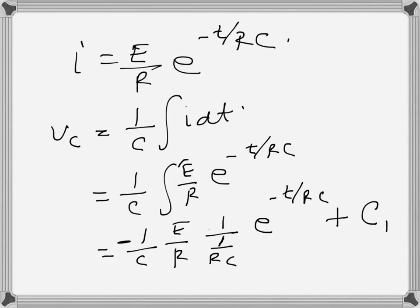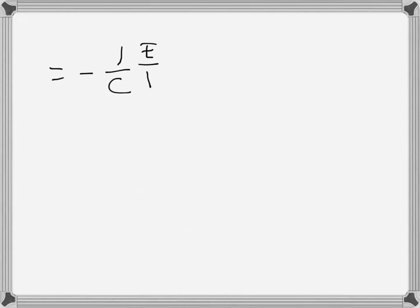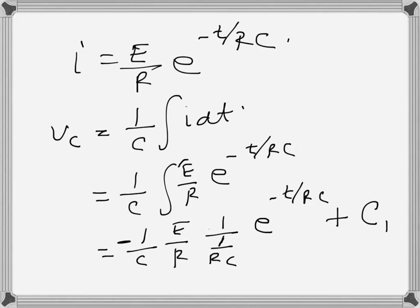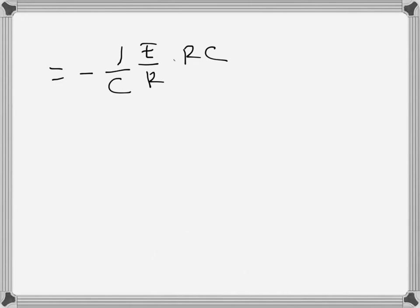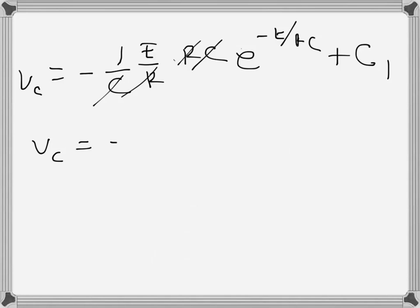Going to the next step: the RC goes to the numerator because it was the coefficient of t in the power. After the integration, the R and C cancel with the R in the denominator, and we get Vc = negative E · e^(minus t over RC) plus integration constant C1.